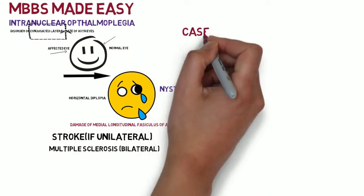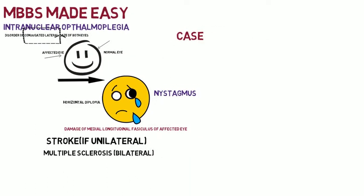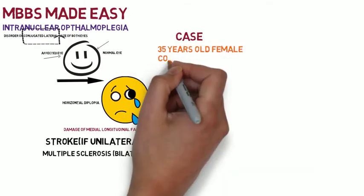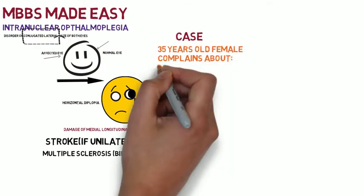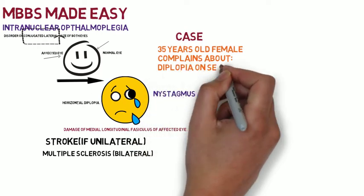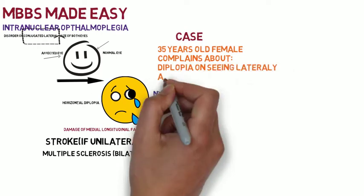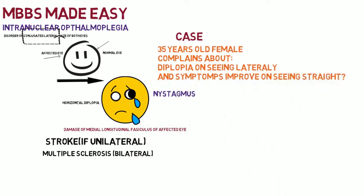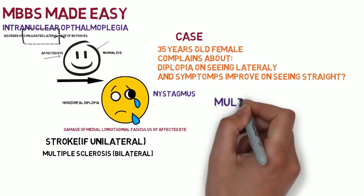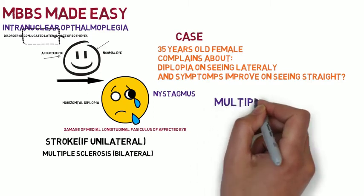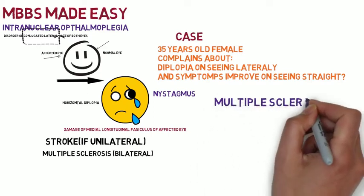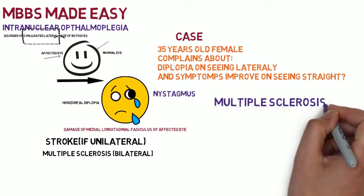Let's discuss a case. A 35-year-old female complains about diplopia on looking laterally, and symptoms improve on looking straight. This is basically a case of multiple sclerosis, as the patient is a young woman.